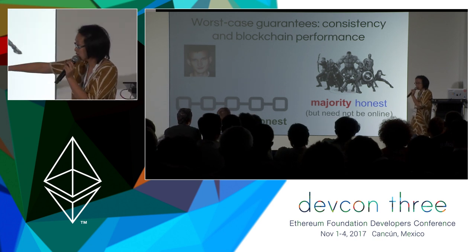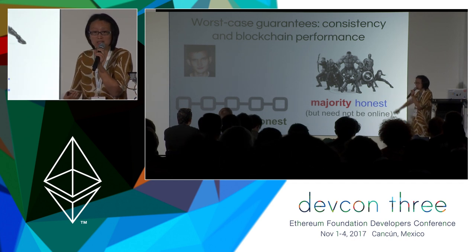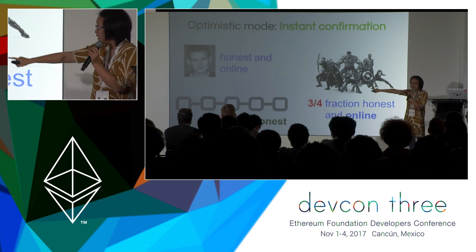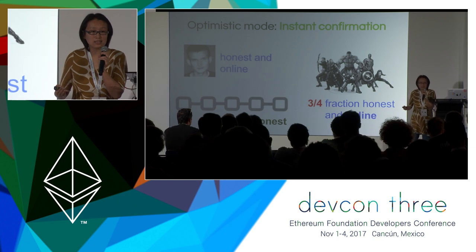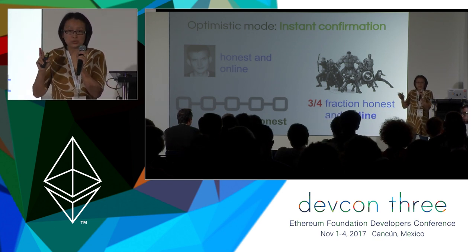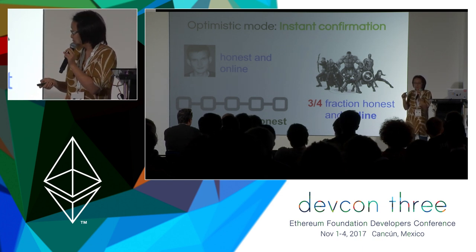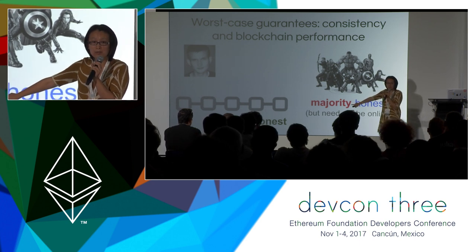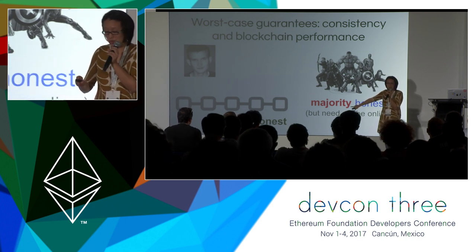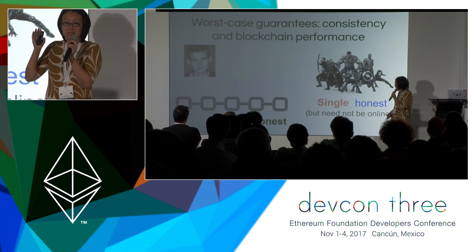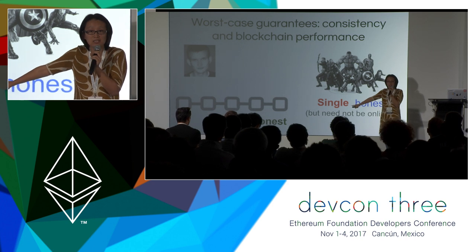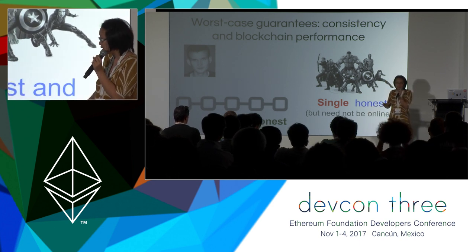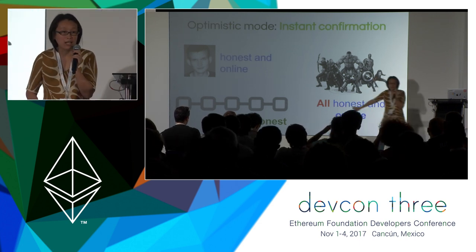To summarize the security guarantees: when the miners are majority honest and the committee is also majority honest, we get our worst-case guarantees. However, when things are good — the leader is honest and online, and three-quarters of the committee are honest and online — we confirm transactions in two network round trips, not even waiting for a single block interval. This parameter is tunable: if you want security as long as even a single member of the committee is honest, you pay a little in the fast-path condition — you'd require all committee members to be online and honest in order to be fast.